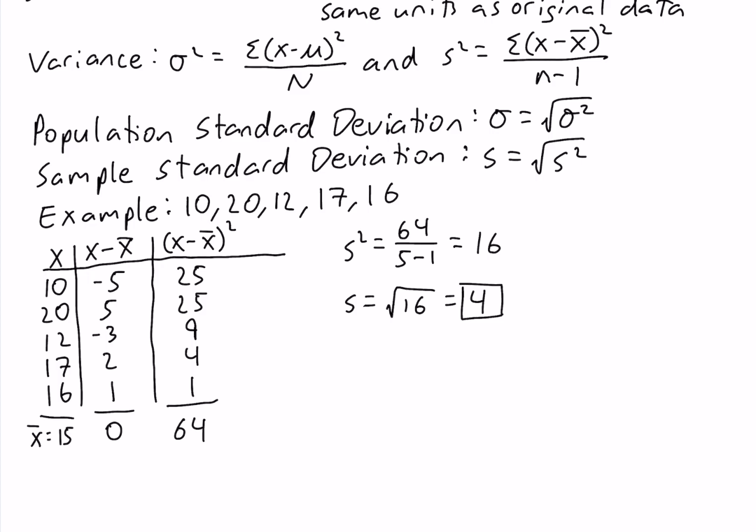Now our result here is going to be in the same units as the data. So for example, if this data was in inches, we could say that the sample standard deviation is 4 inches. But we wouldn't be able to say that about the sample variance — the sample variance would be 16 inches squared, not 16 inches.